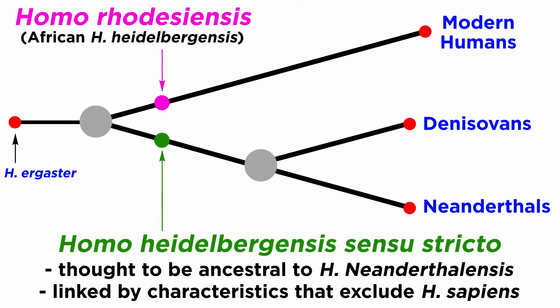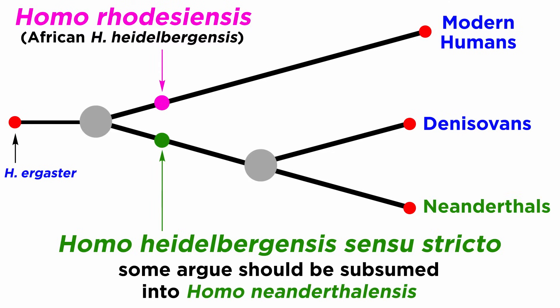As a result, some have proposed that the African Homo heidelbergensis should instead be known as Homo rhodesiensis. This is also controversial both scientifically and culturally. From a scientific standpoint, some have argued that Homo heidelbergensis should simply be subsumed into the Neanderthals. This would make Homo neanderthalensis a much more variable and long-lived species, and it follows then that early Homo sapiens, or Homo rhodesiensis, should also be subsumed into that species.